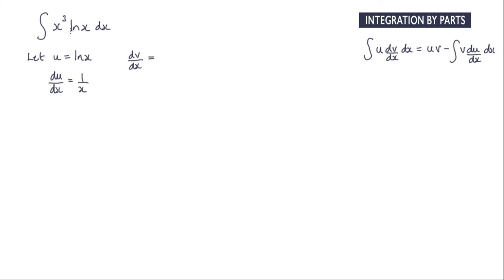The dv by dx therefore must be the x cubed term, so x cubed. And v is the integral of that, which is x to the power of 4 over 4.